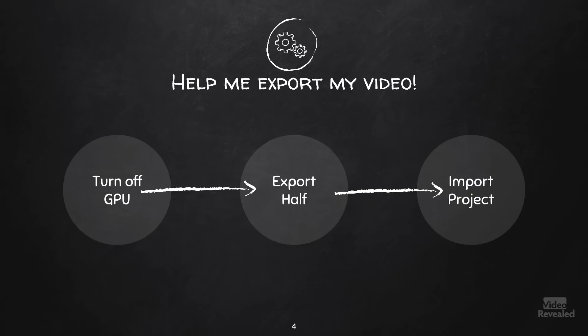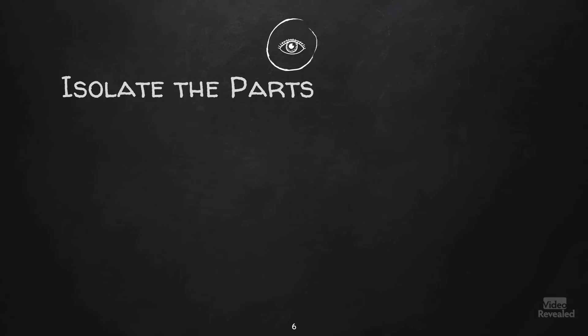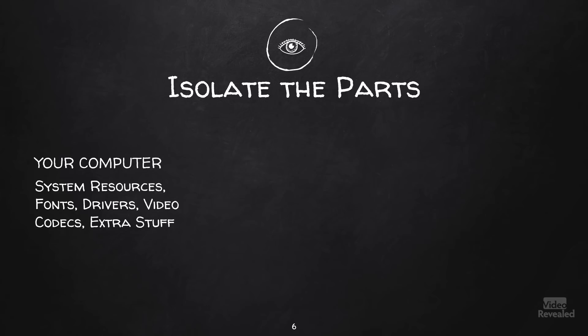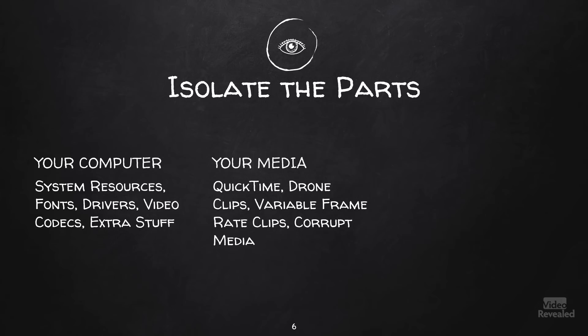Let's talk about methodically going through how to troubleshoot. The first thing to do is divide the problem and isolate each part. One is the computer — your system resources, fonts, drivers, video codecs, and any extra stuff. Next is your media — QuickTime, drone clips, variable frame rate clips, corrupt media, all of that. And lastly, it's Premiere Pro, where we can have things like a corrupt cache, a problem install, and sometimes bugs.